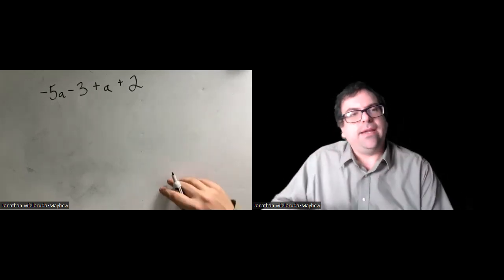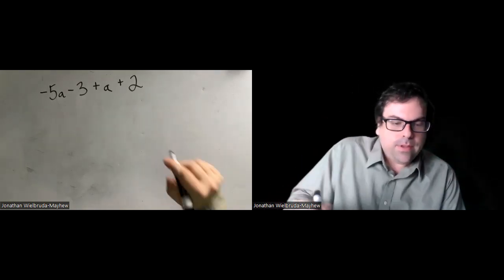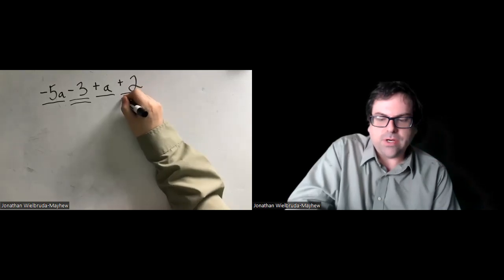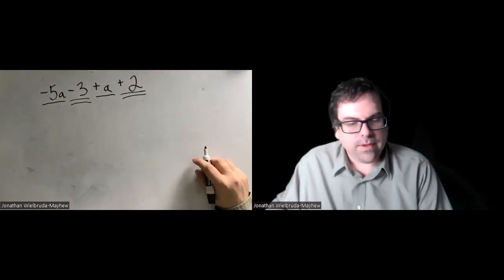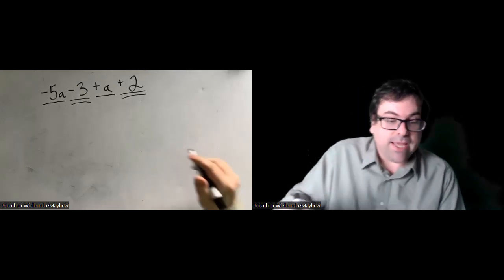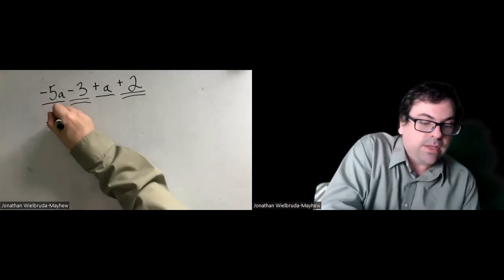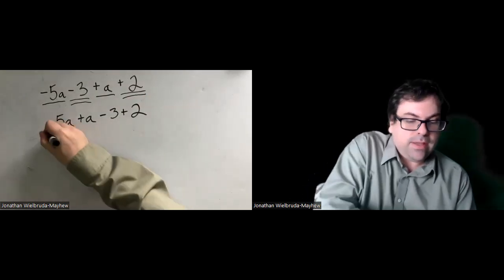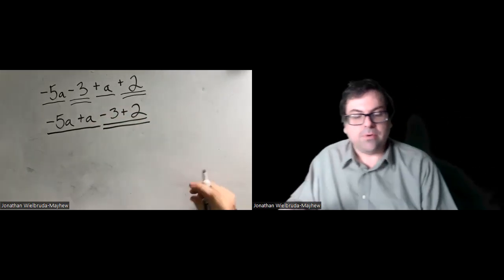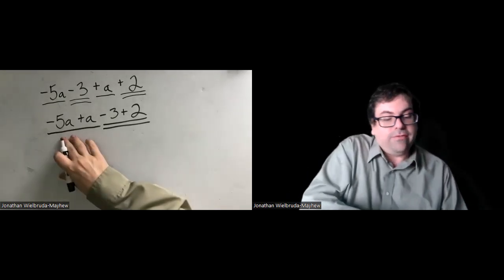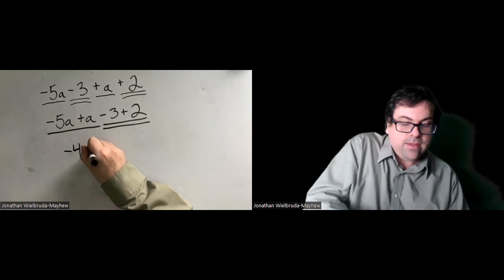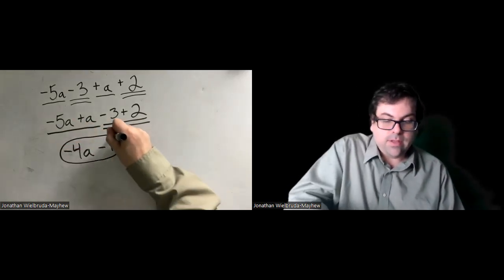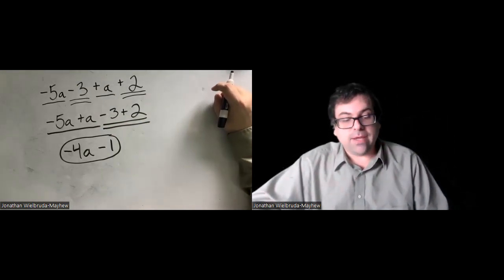Negative 5a minus 3 plus a plus 2. Your a's are together and your numbers are together. Negative 5 plus 1 is negative 4, so negative 4a. Negative 3 plus 2 is negative 1. Negative 4a minus 1 is what we get when we combine our like terms here.